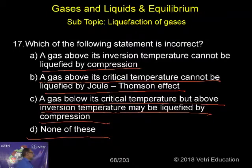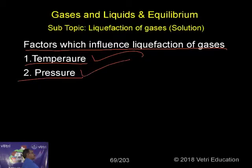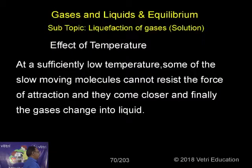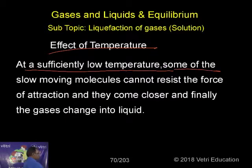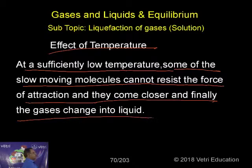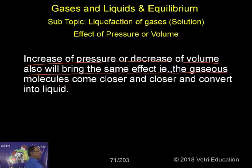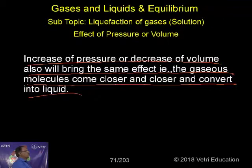Only below the critical temperature, if you apply pressure, it will be liquefied — either by the Joule-Thompson effect or demagnetization. So the factors which influence liquefaction of a gas are temperature and pressure. At sufficiently low temperature, slow-moving molecules cannot resist the force of attraction; they come closer and finally the gas changes into liquid. Increasing pressure decreases volume, bringing the same effect — gas molecules come closer and convert to liquid.